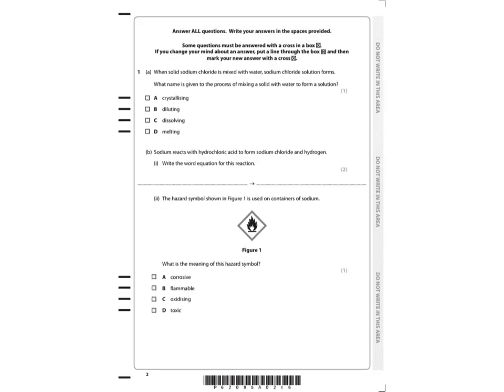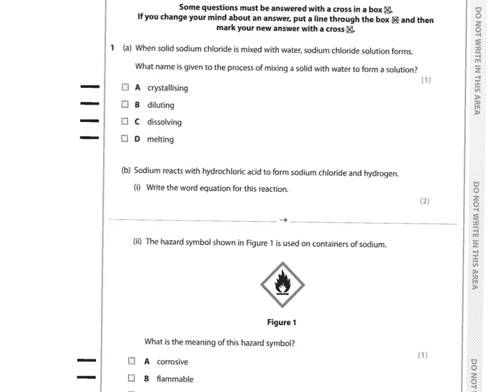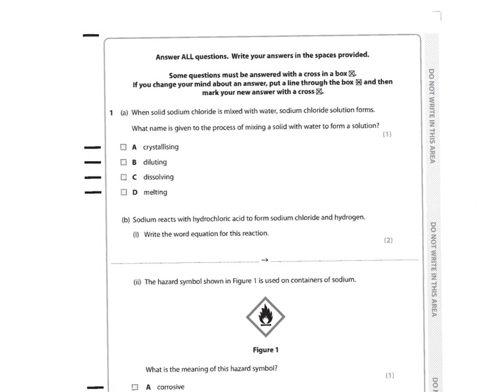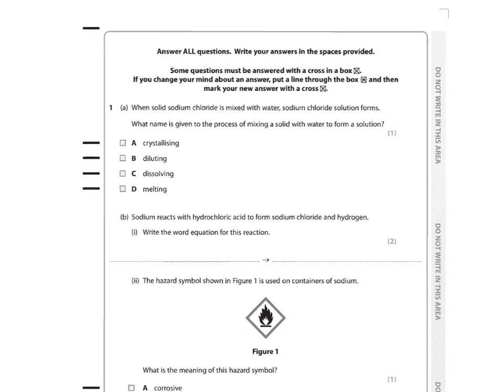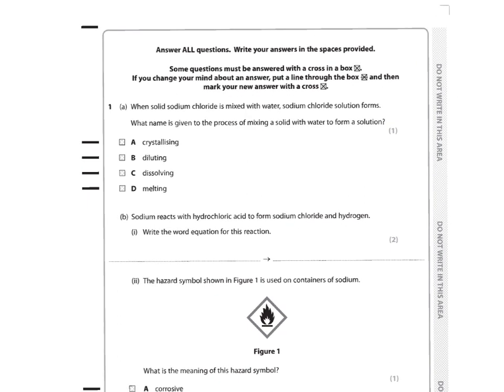Question one says: when solid sodium chloride is mixed with water, sodium chloride solution forms. What name is given to the process of mixing a solid with water to form a solution? The answer is dissolving. The sodium chloride will dissolve to form a solution.